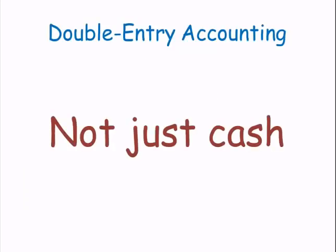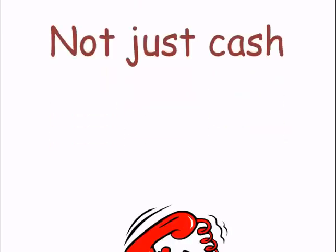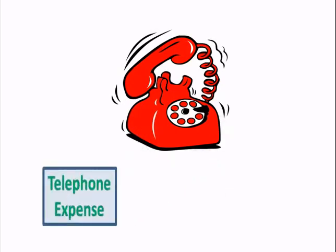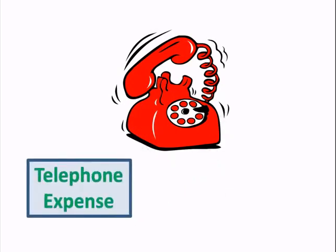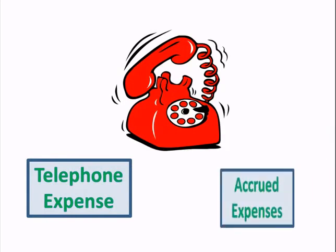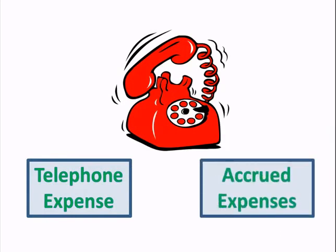Remember that cash may not be involved in a transaction. For example, many businesses have telephone expenses that they pay for after the telephone was used. The business has an expense, but it also owes the telephone company. In this case, we would debit the telephone expense and credit accrued expenses.